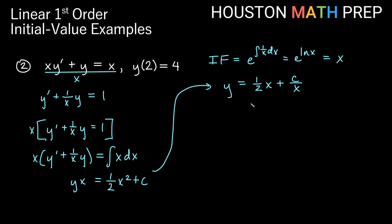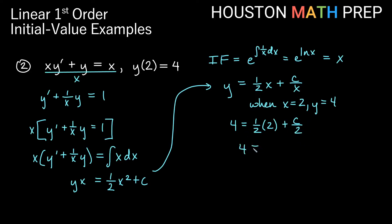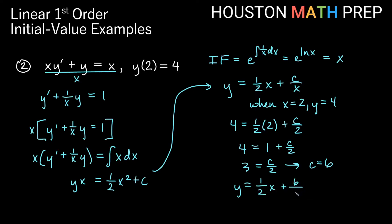Now we use our condition y of 2 equals 4, meaning when x is 2 then y is 4. Plugging in: 4 equals one half times 2 plus c over 2, so 4 equals 1 plus c over 2. Subtracting 1 from both sides gives 3 equals c over 2, and multiplying both sides by 2 gives c equals 6. Our particular solution is y equals one half x plus 6 over x.